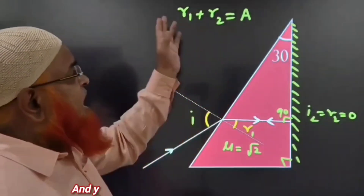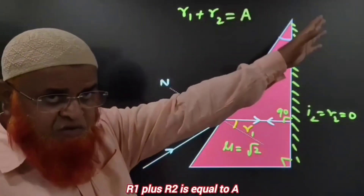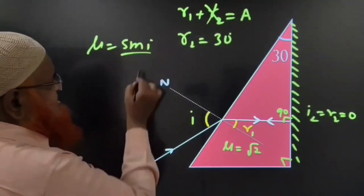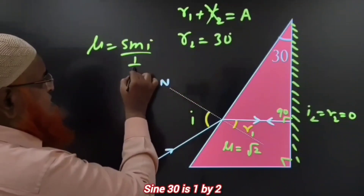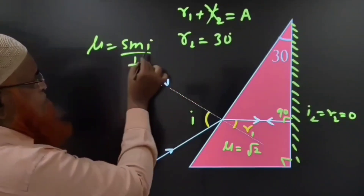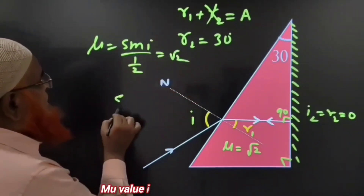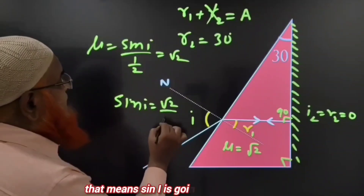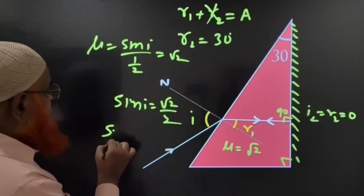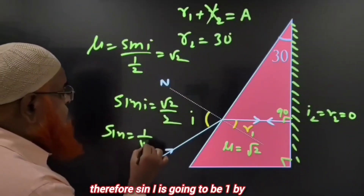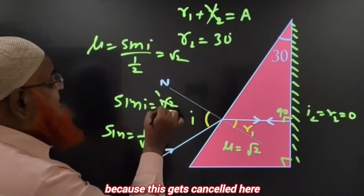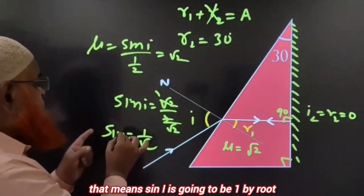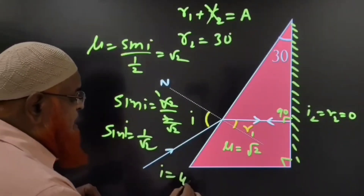You know the famous equation for a prism: R1 plus R2 equals A, and mu equals sin I by sin R. Here sin R is sin 30 degrees, which is 1/2. The mu value is root 2. That means sin I is going to be root 2 divided by 2, which simplifies to 1 by root 2. Therefore I is going to be 45 degrees.